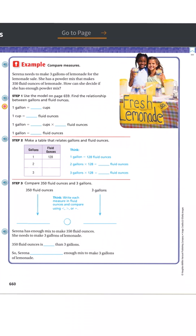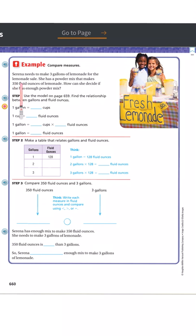Let's look at another question. Serena needs to make three gallons of lemonade for the lemonade sale. She has a powder mix that makes 350 fluid ounces of lemonade. How can she decide if she has enough? We want to know if 350 fluid ounces is equal to or more than three gallons, so we have to figure out how many fluid ounces are in a gallon.